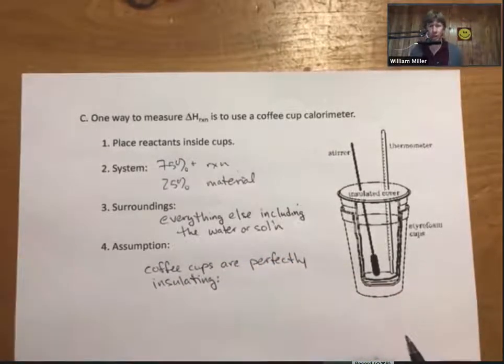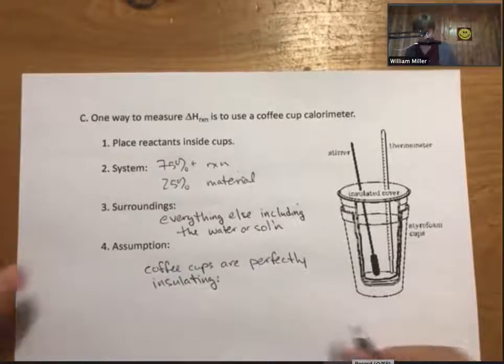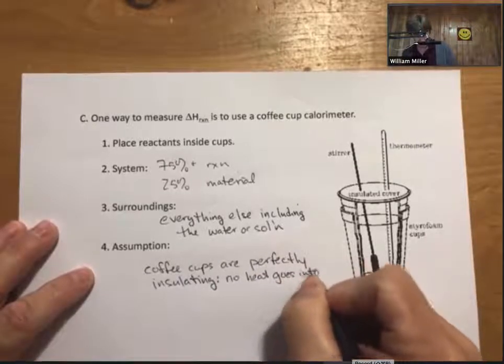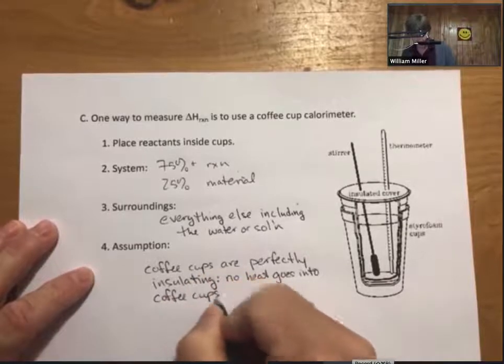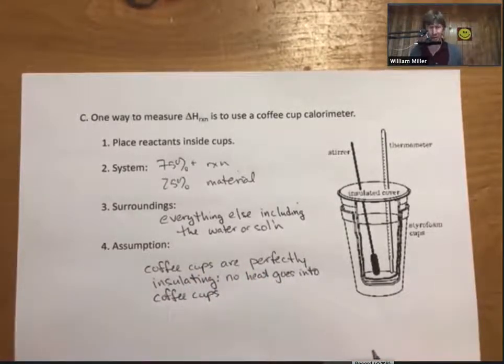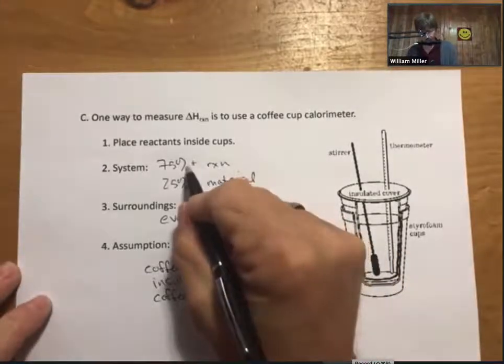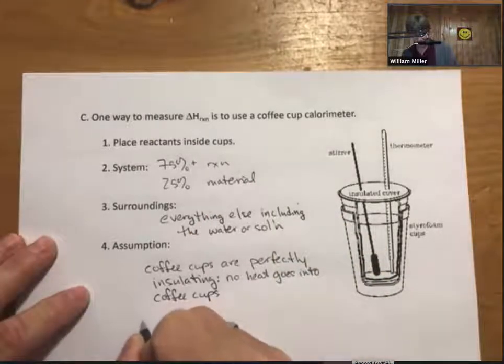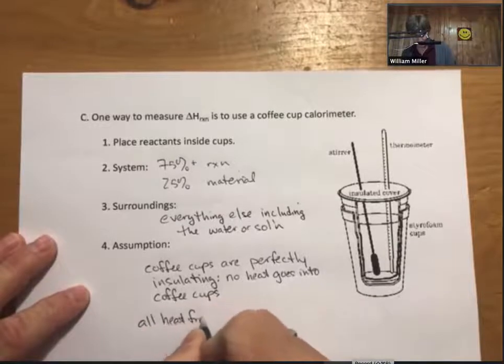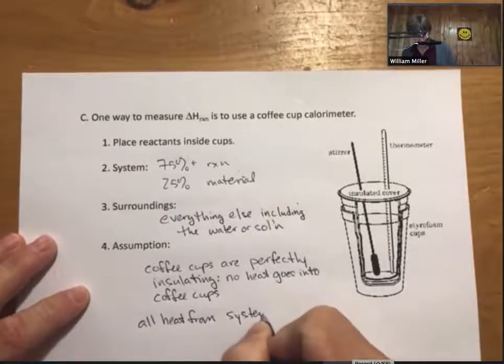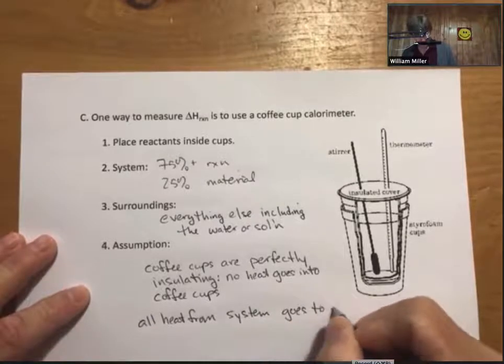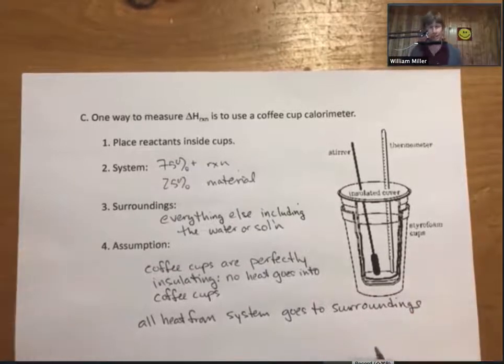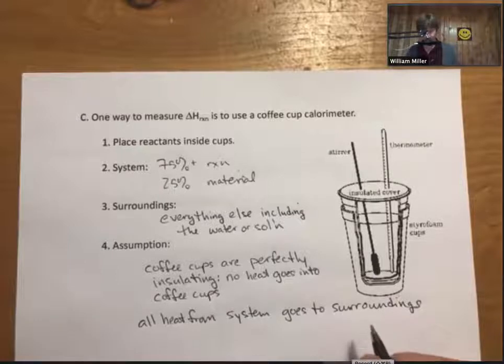And the assumption when using a coffee cup calorimeter is that the coffee cups are perfectly insulating, which means no heat escapes or goes into the coffee cups. No heat goes into coffee cups. And therefore, all of the heat from the system, whether it's a reaction or material, all of the heat from the system goes to surroundings. And I'll show you on the next page.